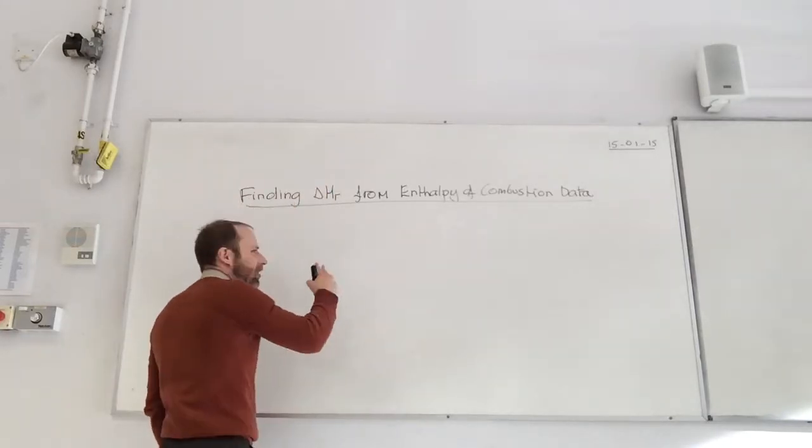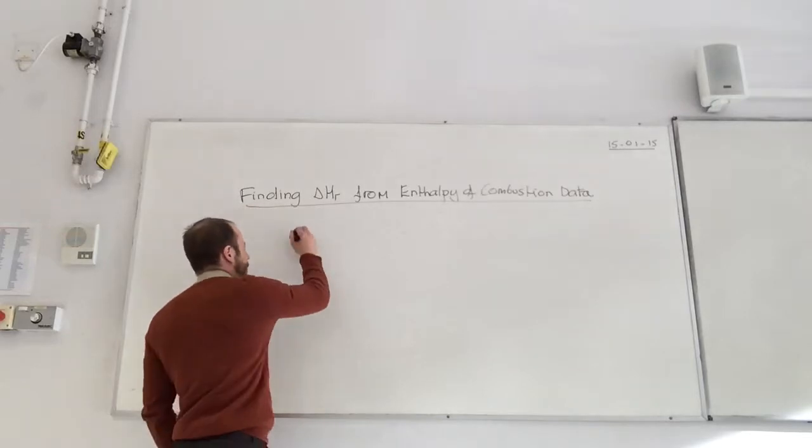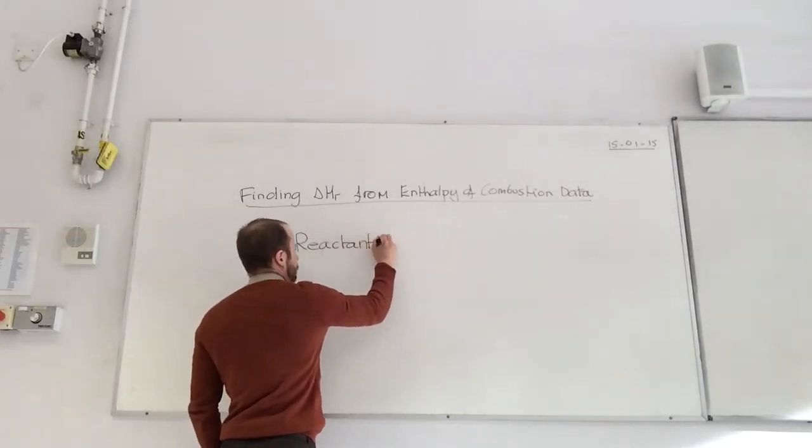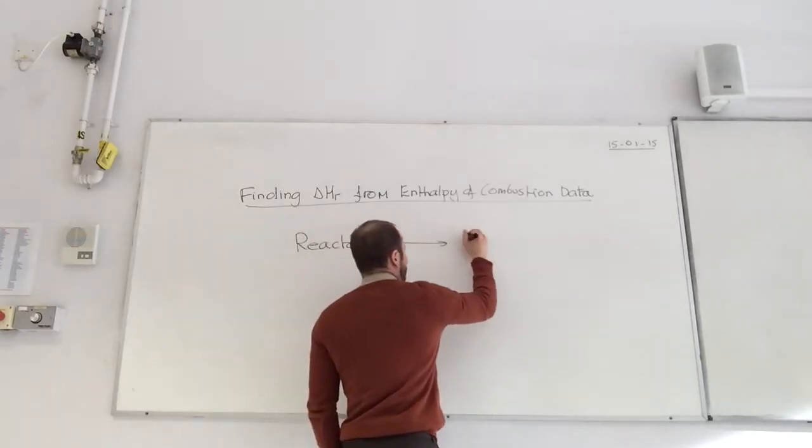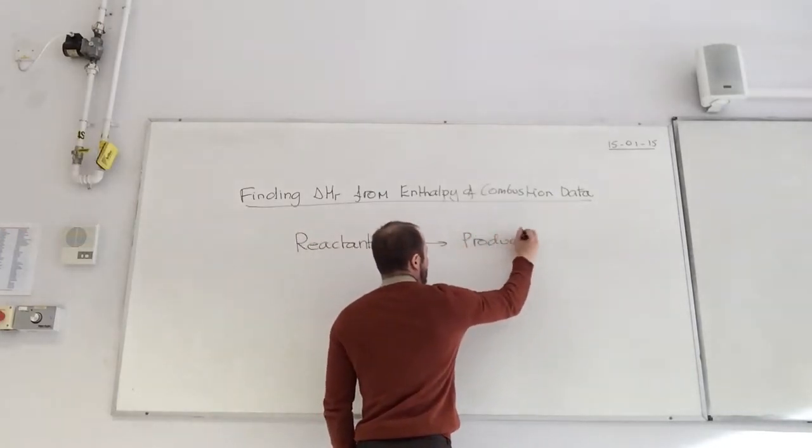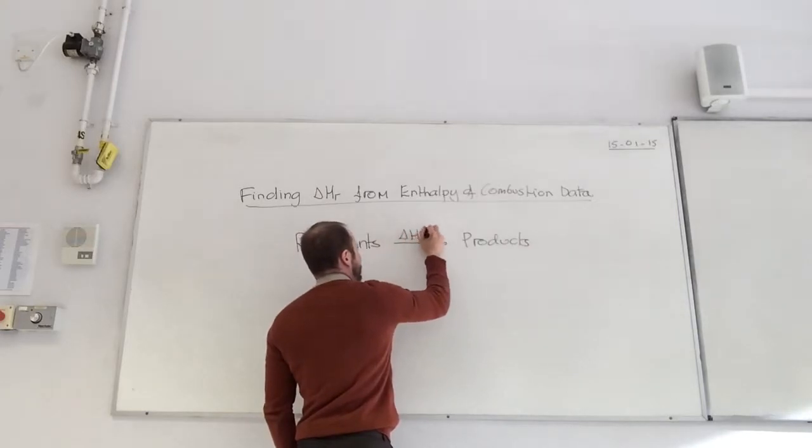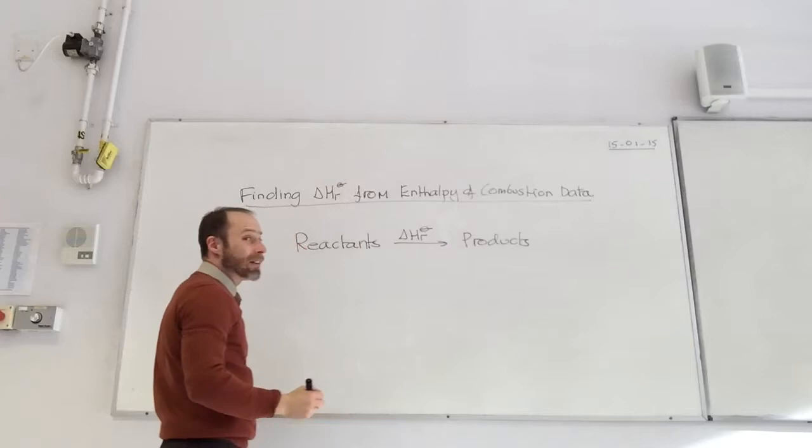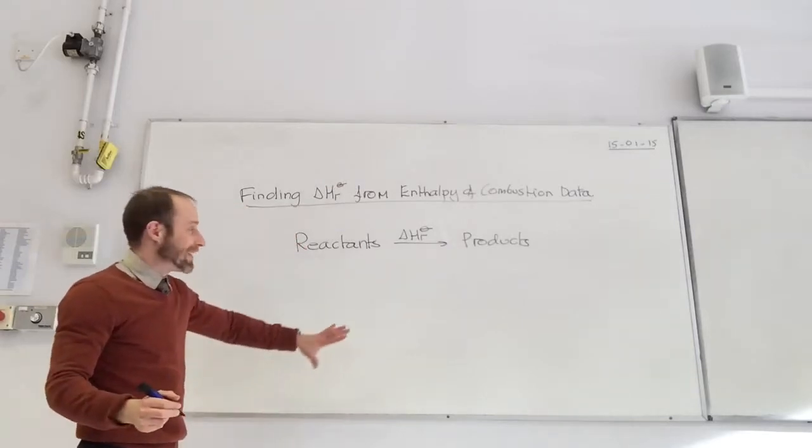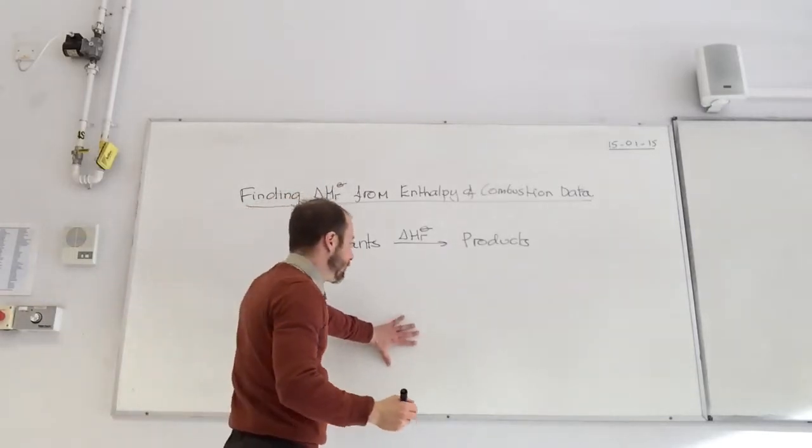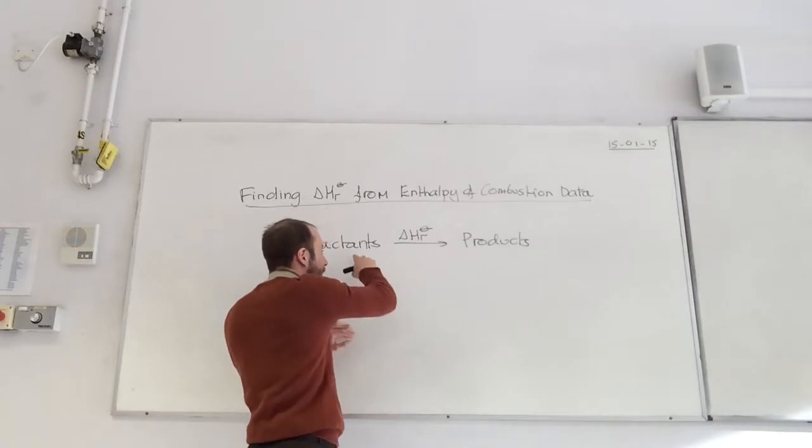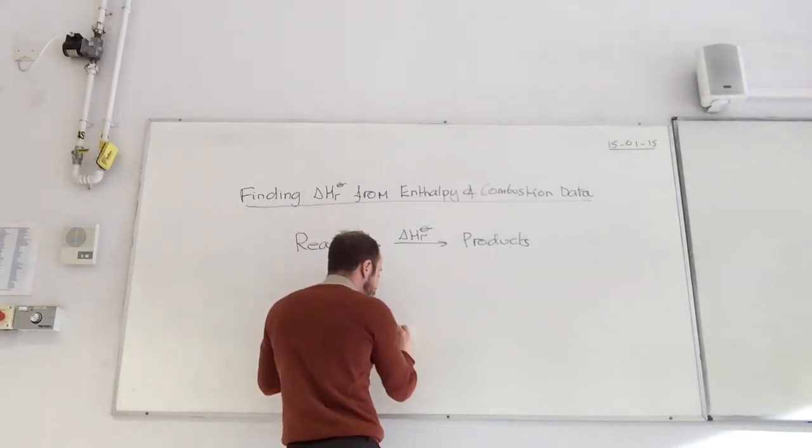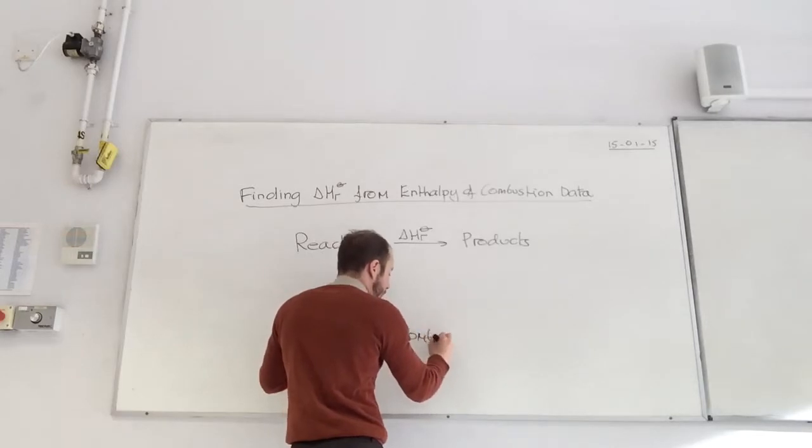So, the way our general scheme is if we have reactants go into products, and I want to find this delta HR standard, and I've got combustion products down here. What do all these do? If I've got combustion data, I always pull the combustion products down here.